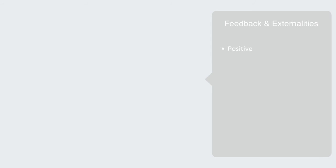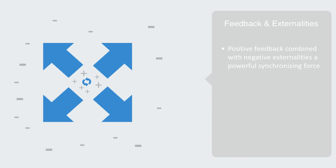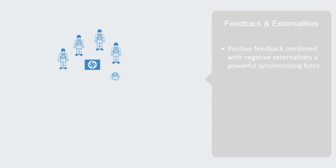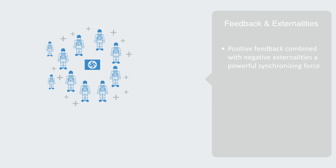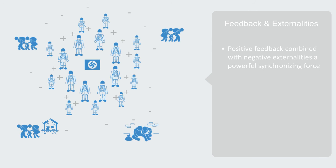Positive feedback combined with negative externalities can be a powerful force for synchronizing the state of elements within a system, as it both places a strong attraction on elements of the same class to synchronize their states while also depleting a different class. We might think about the rise of the Third Reich in pre-war Germany as an example. Every time a new member adheres and promotes the ideology of a socio-political organization like the Nazi Party, it has a positive feedback effect amplifying this attractor. But also, this social system was having a negative externality on other ethnic minority groups. Thus, it was both reducing the variety within the social group and external to it, as all elements became aligned in this socio-political regime.